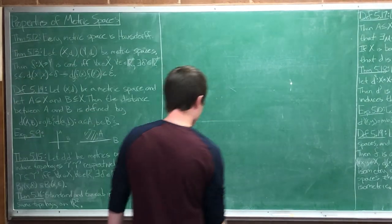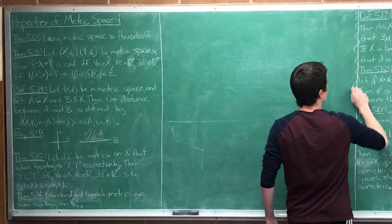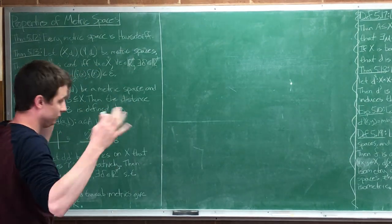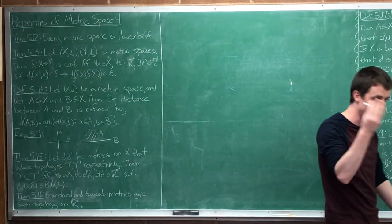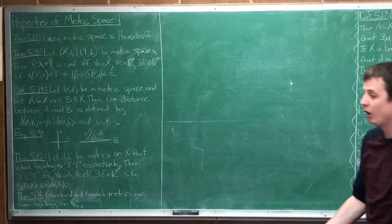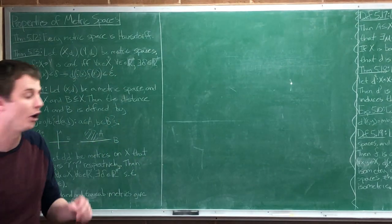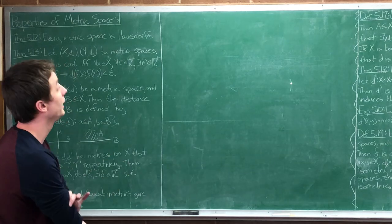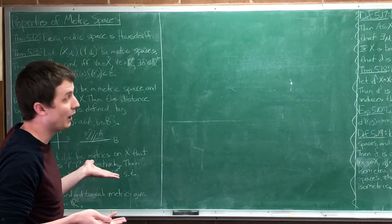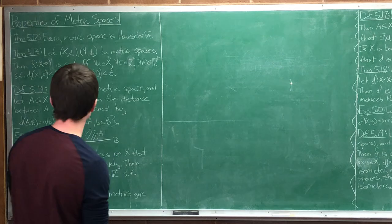You remember what we talked about last time - metric spaces. Today, all we're looking at is properties of metric spaces. We'll be pretty much proving a bunch of theorems about metric spaces, things we know about them. And then that will be the end of metric spaces here, and we'll move on to a topic of topologies being connected.